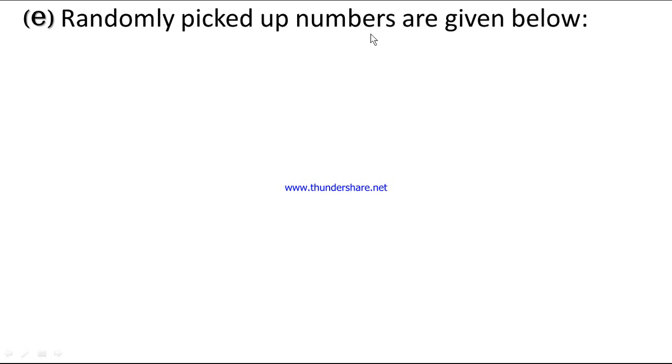Number e. Randomly picked up numbers are given below: 11, 10, and 22. Here we will determine the least common multiples. Here we will find the factors from 22, 11, and 10.